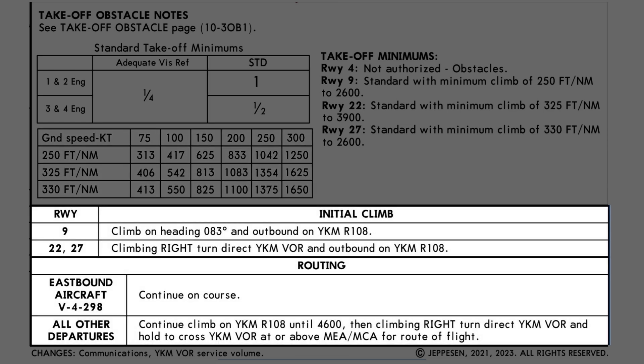Along the bottom we have our initial climb instructions and then the routing. Let's say we're using runway 27. It involves a climbing right turn direct to the Yakima VOR and then flying outbound along the 108 radial. Our routing isn't eastbound along the Victor Airway on this radial — we're in the all other departures category — so we want to make a right turn at 4,600 feet back direct to the Yakima VOR.